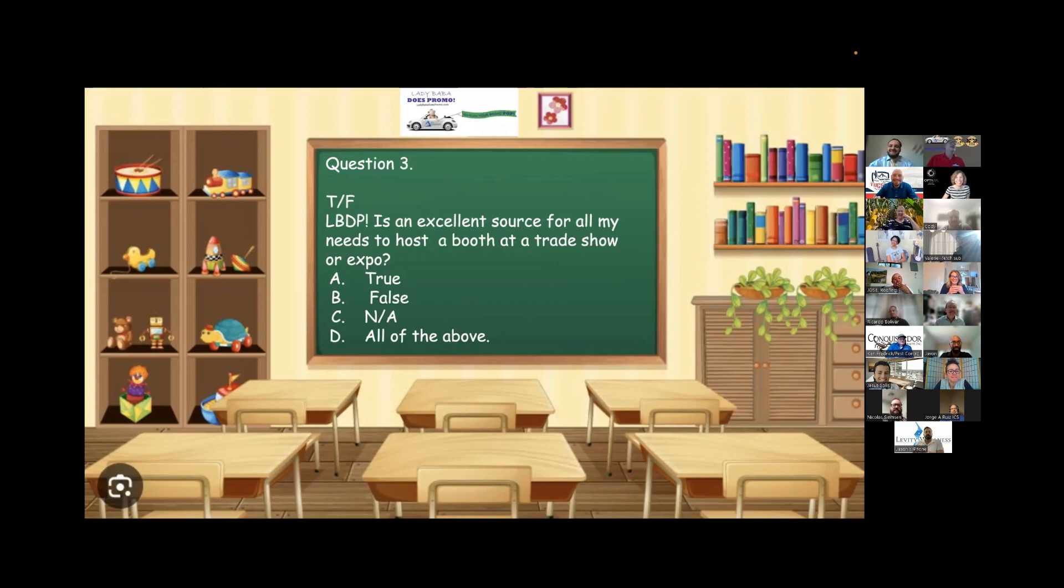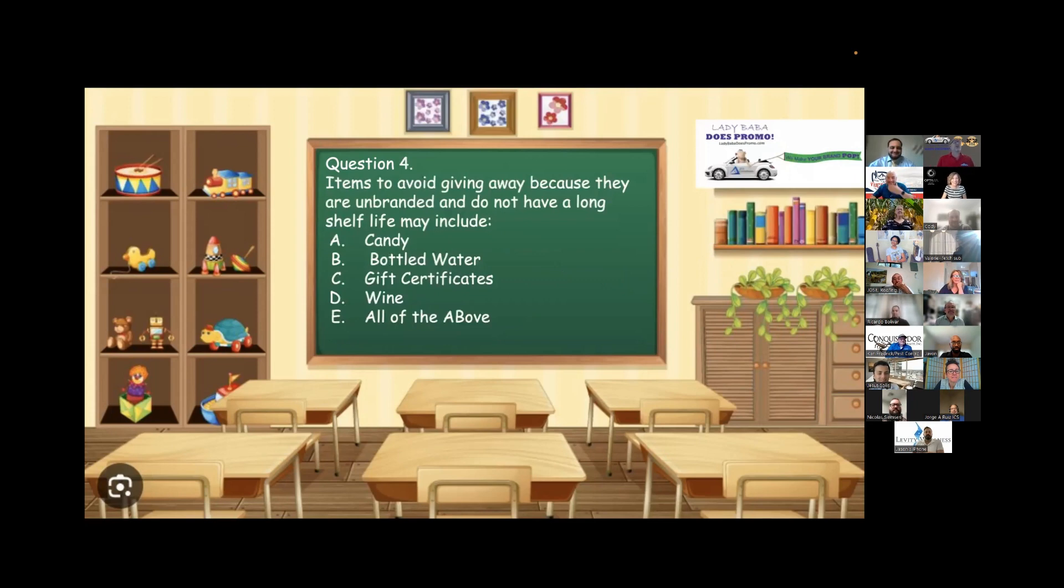Question four. Donna, items to avoid giving away because they are unbranded and do not have a long shelf life may include A, candy. B, bottled water. C, gift certificates. D, wine. Or E, all of the above. I'm going to go with A because you could brand all the rest of those things. Well, we're talking about blank items. Okay. Then all of the above. Very good. Well, a little teacher's help. Never heard.